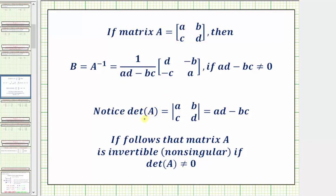Using these elements, notice how the determinant of matrix A is equal to AD minus BC. So if the determinant of a square matrix does not equal zero, then that square matrix is invertible or non-singular.